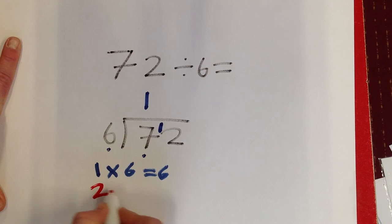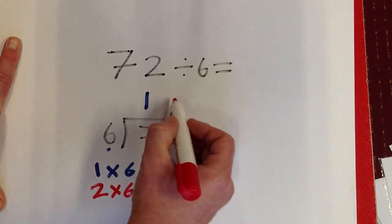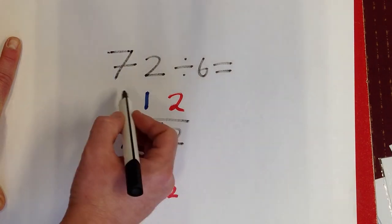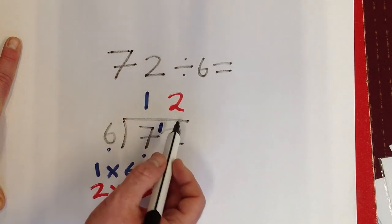I know 2 times 6 equals 12. So up here, I'm going to put a 2. The answer, then, to 72 divided by 6 is 12.